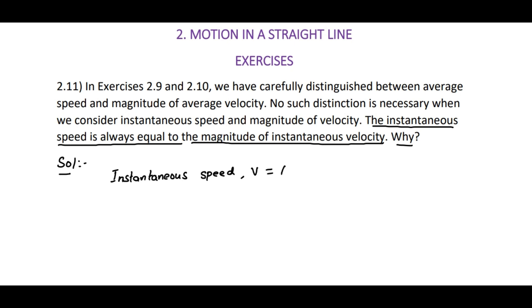v is equal to limit delta t tends to zero, delta x divided by delta t, that is also equal to dx divided by dt. For instantaneous velocity, v is equal to delta t tends to zero, delta x bar divided by delta t, that is also nothing but dx bar divided by dt.